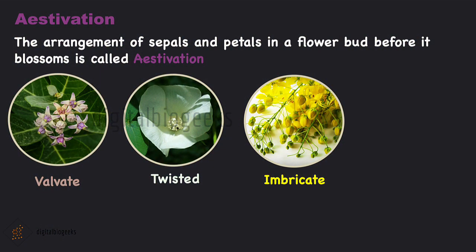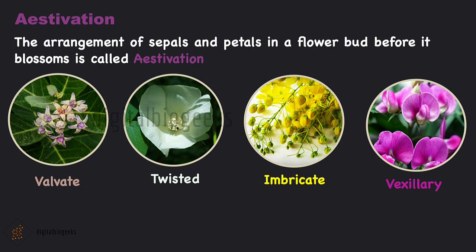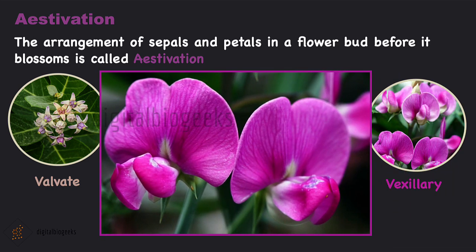Next is vexillary aestivation — for example, bean or pea flower. Here usually five petals can be seen. The standard petal (the larger one) is arranged on the outer side. Inside there will be two lateral petals known as the wings, and inside that will be the smallest anterior petals or keel. This arrangement is also known as papilionaceous arrangement.